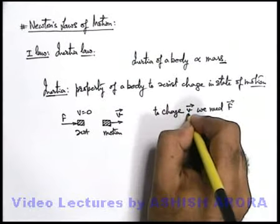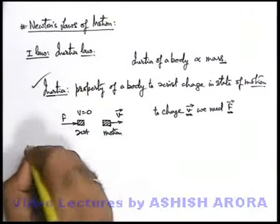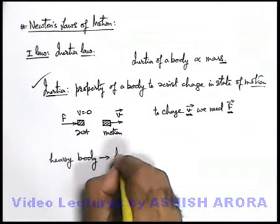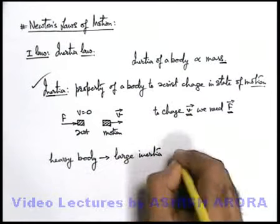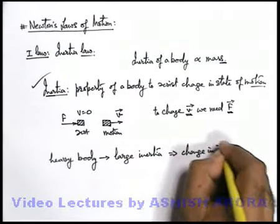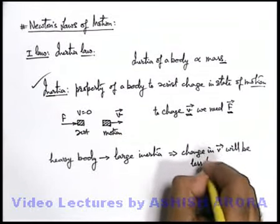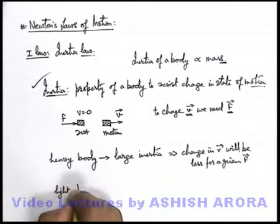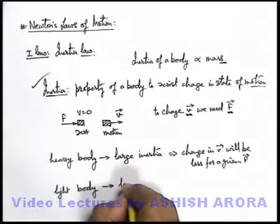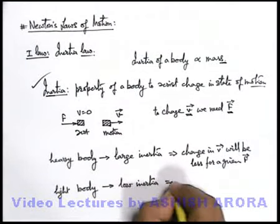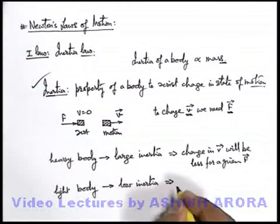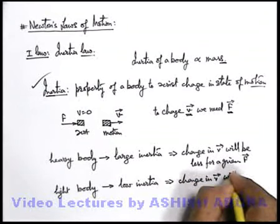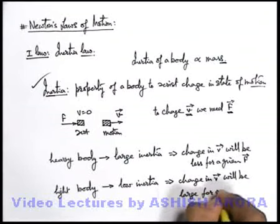How much we are able to change this velocity vector by applying a force depends on inertia. If there is a heavy body, it will have large inertia, which implies the change in velocity vector will be less for a given force. Similarly, if we talk about a light weight body, it will have low inertia, so it will oppose the change in state of motion very slightly, and the change in velocity vector will be large for a given force.